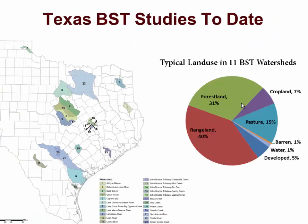This map shows the watersheds and subwatersheds where we've done BST studies to date — about a dozen large watersheds or two dozen subwatersheds. These are predominantly rural watersheds: 40% rangeland on average, 31% forest land, and 5% or less is developed.